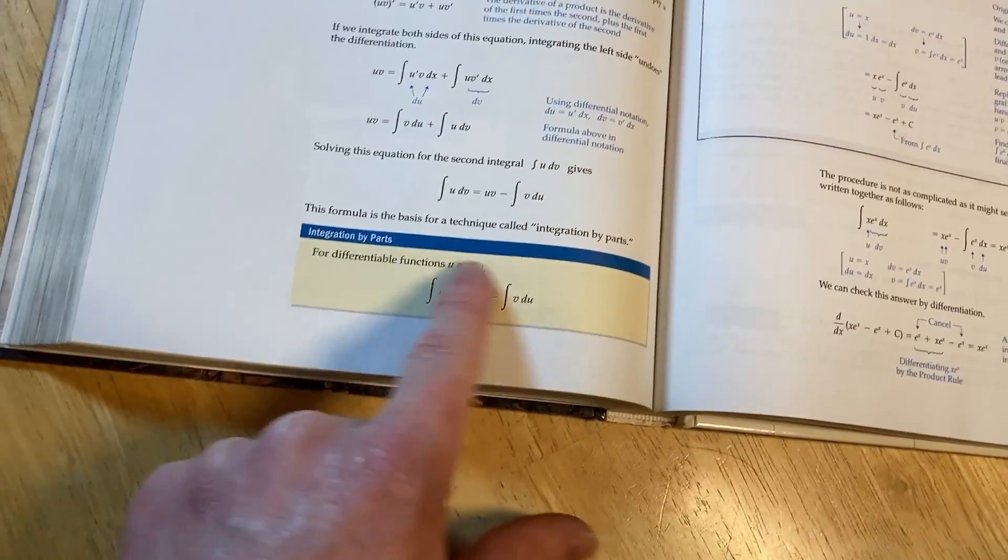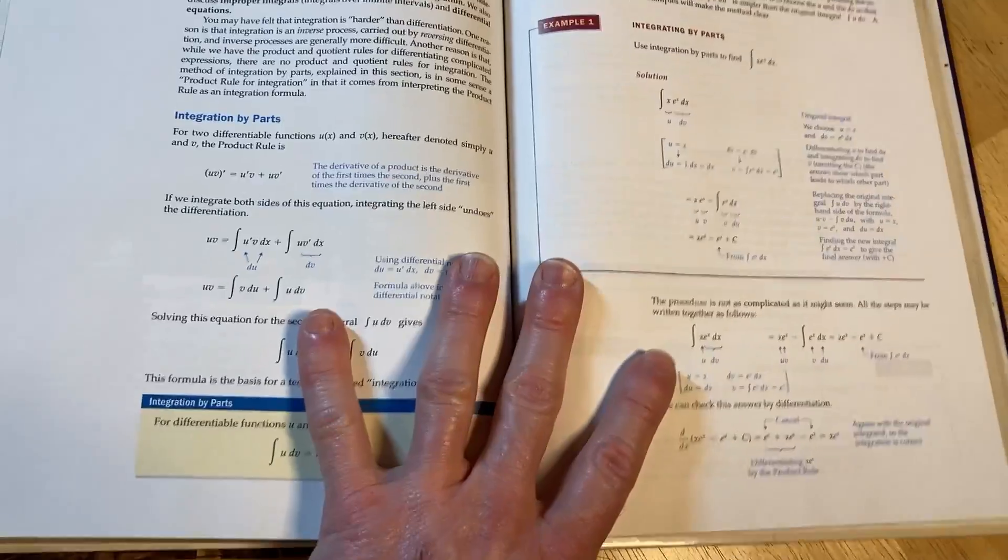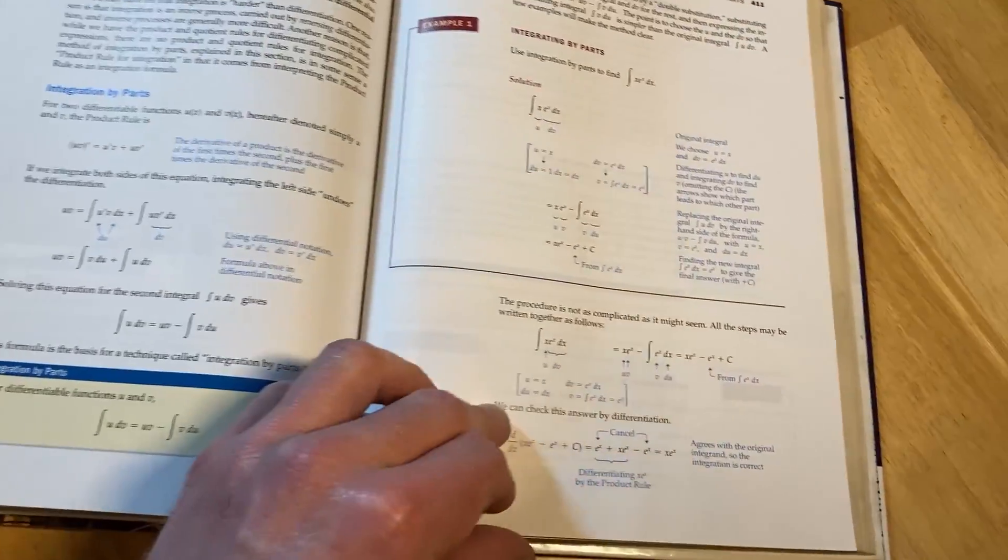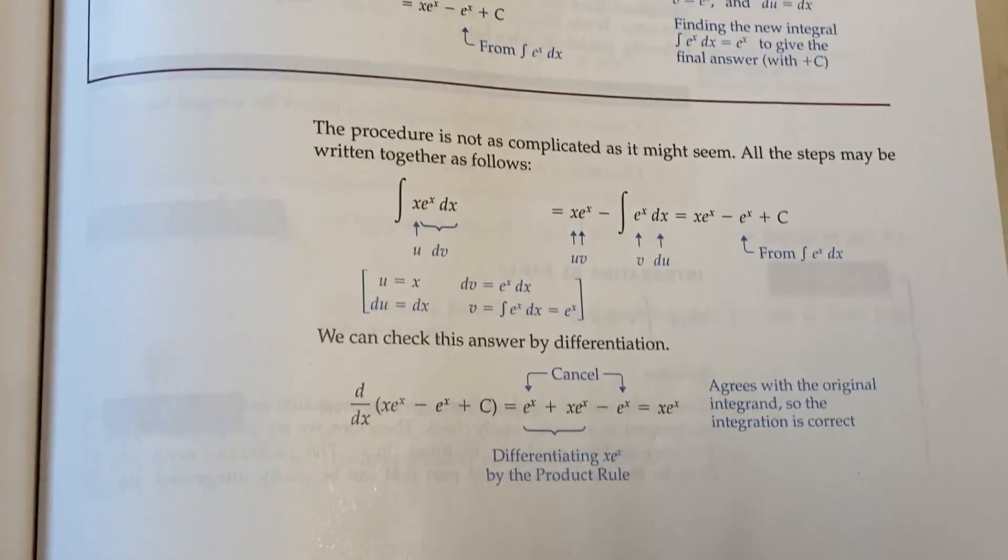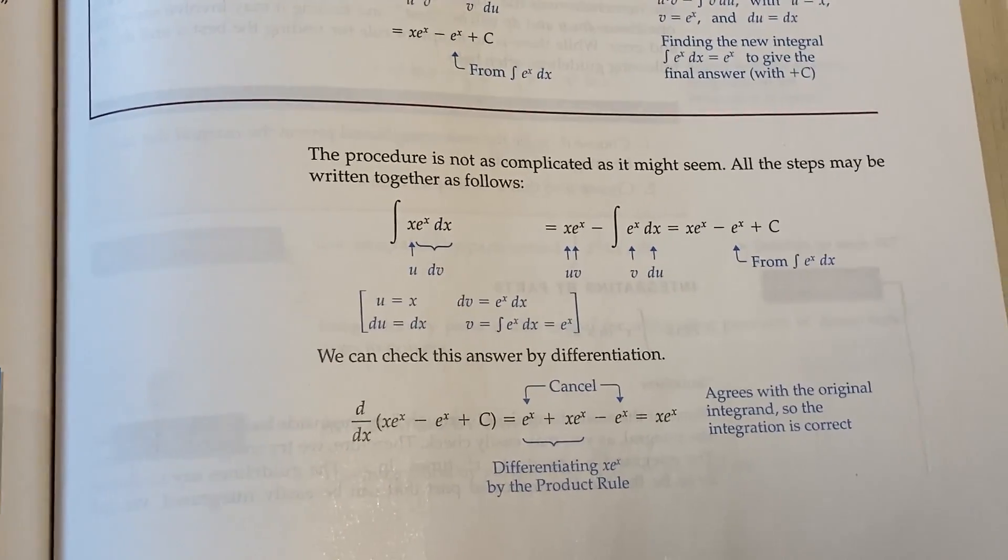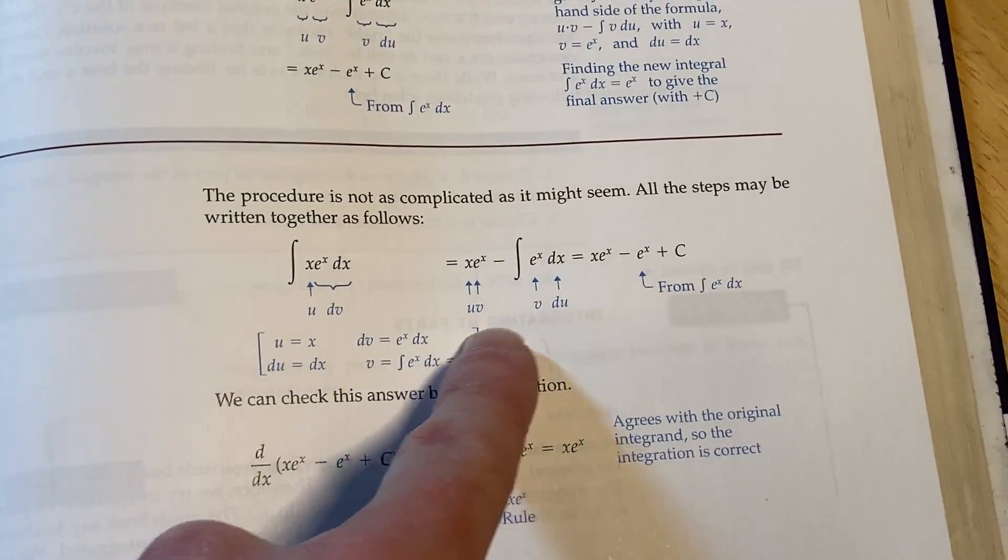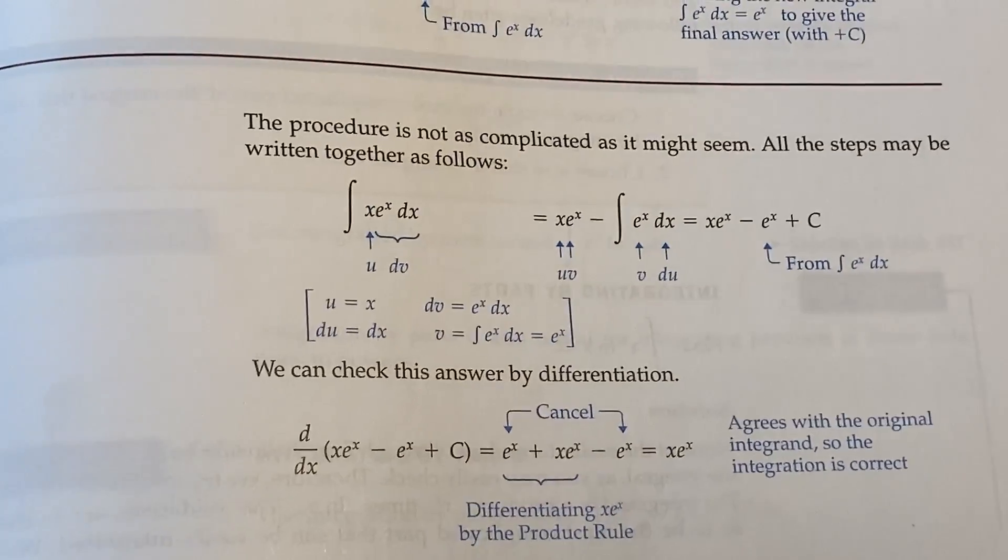You can see how it has like this yellow box here and it has the formula. I feel that that is excellent for people reading. I think it's very easy to read. The layout is very good. Look at this. It shows you everything. The procedure is not as complicated as it might seem. All the steps may be written together as follows. They just do an excellent job. Look at the little arrows and stuff. I don't think it's possible to do better.